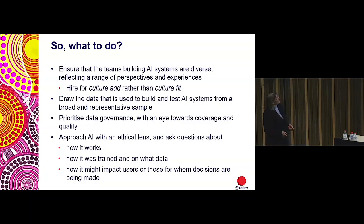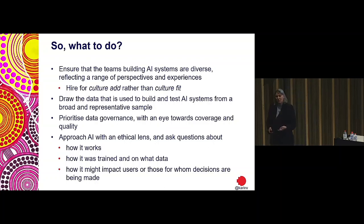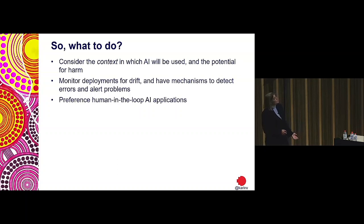So what can we do about this? Try to hire for culture add rather than culture fit — because when we hire people that look like us, we get more of us. We need to prioritize data governance and approach AI with an ethical lens, asking how it works, how it was trained, what data it was trained on, and how it might impact people. We need to consider the context in which AI will be used and the potential for harm, and monitor every deployment for drift, population changes, and errors.